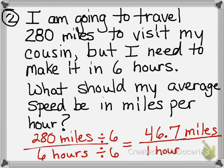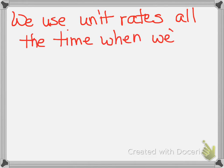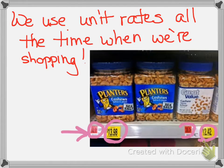Let's talk about how we're going to use this in the real world. Unit rates are all around us — we use them all the time, especially for shopping. If you go into Kroger, Walmart, Meijer, or any of those stores, you're probably going to see two prices listed on the shelf. One will be the big price — that's the price you pay for the container. The smaller price is your unit rate. Stores usually figure that out for you, telling you the price per ounce or price per pound.